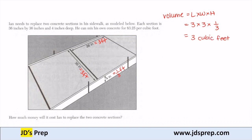Now that's the volume of just one section. Ian is replacing two concrete sections, so we need the total volume. The total volume is 2 times 3 cubic feet, which gives us a total volume of 6 cubic feet.